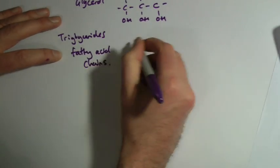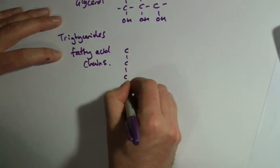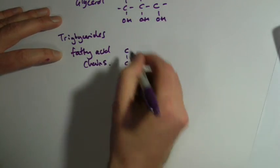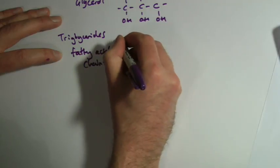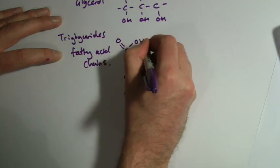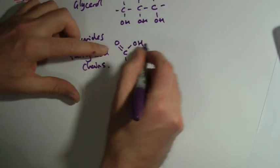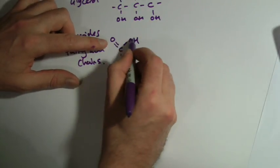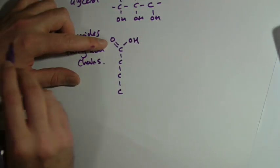A fatty acid chain is pretty straightforward. It's just going to be a big long string of carbons. At one end, the bit that makes the acid, this is called the carboxyl group, a double bonded oxygen and an oxygen and a hydrogen.